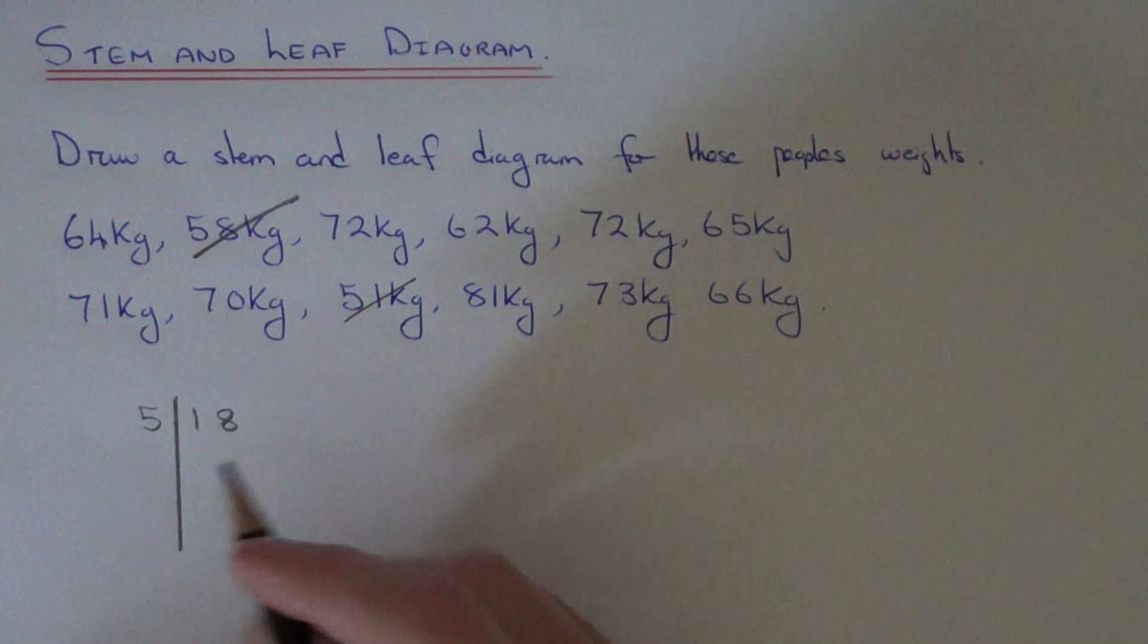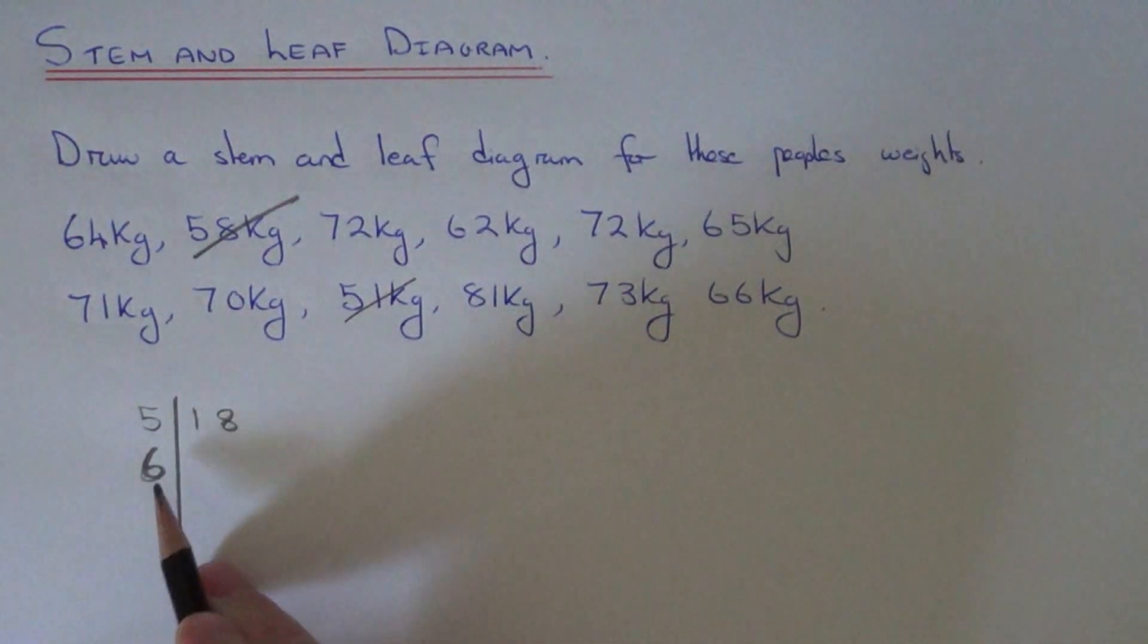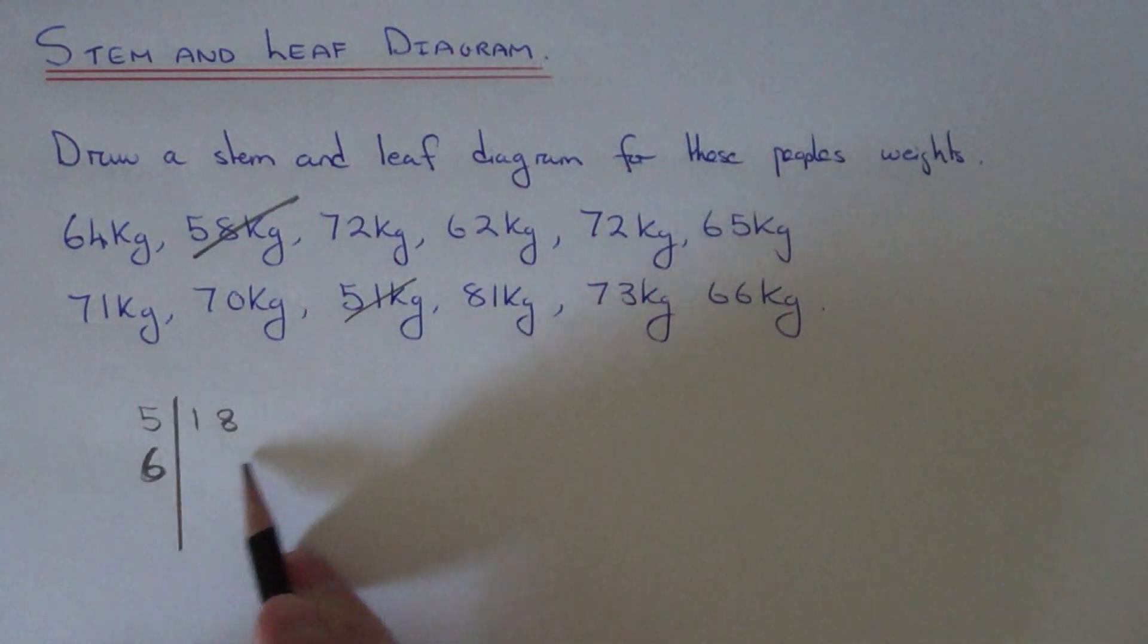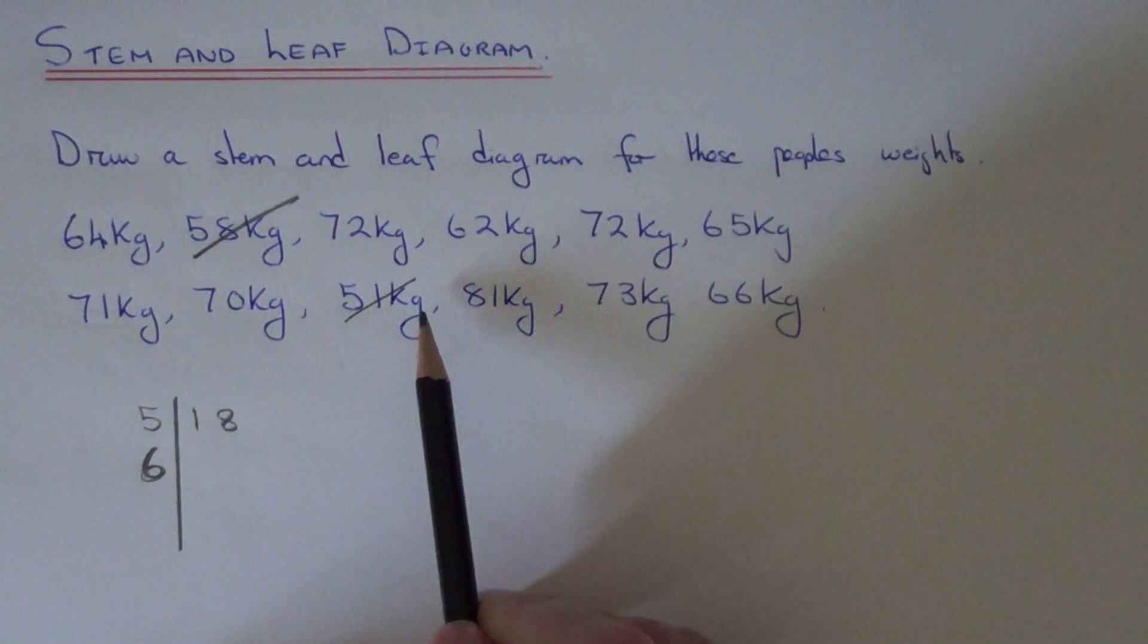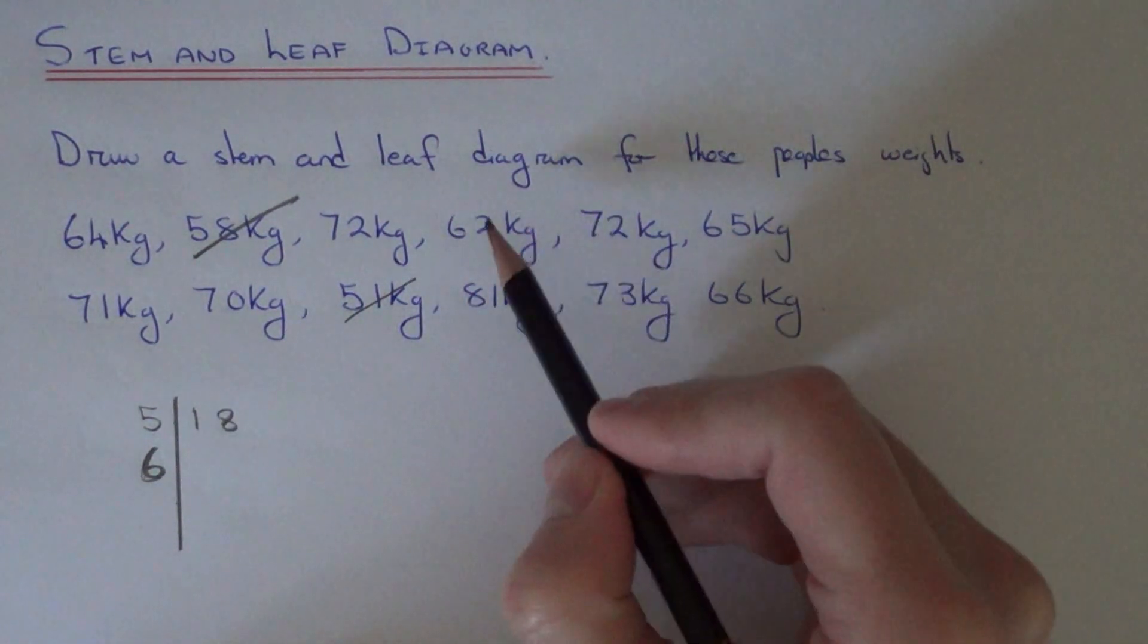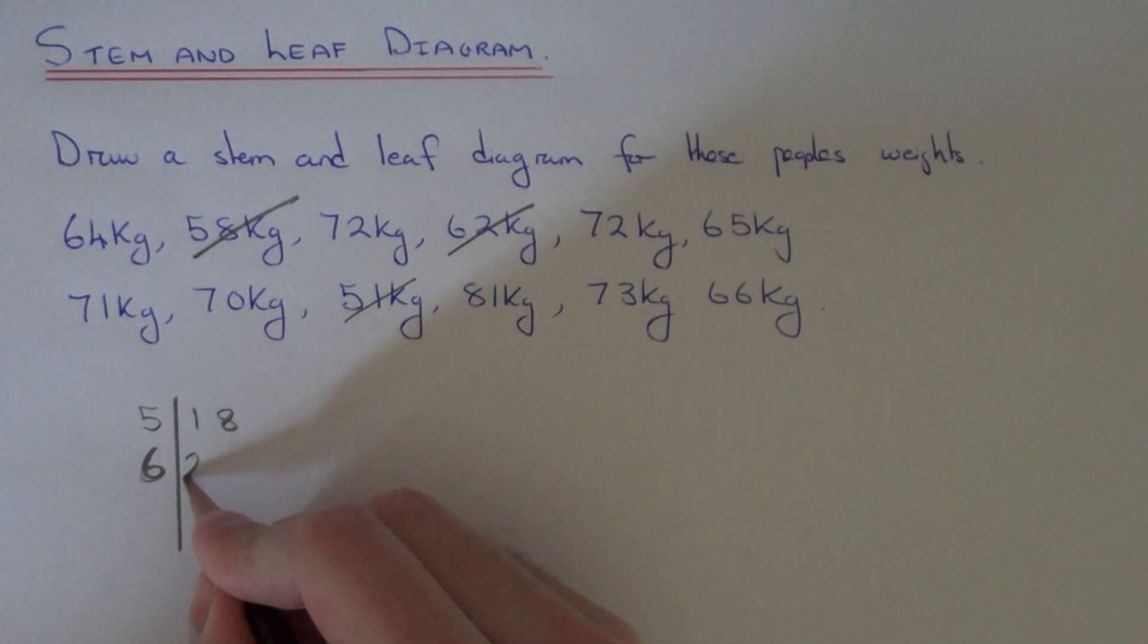Now we're looking for the people in the 60s. So on our next line underneath, we put a 6. This row is for the people's weights in the 60s. Our smallest one in our 60s looks like 62, so we just drop the 2 there.